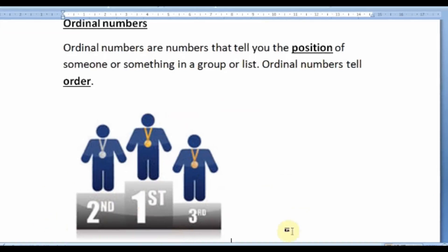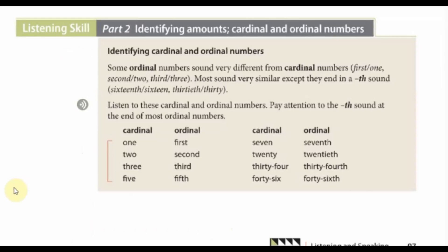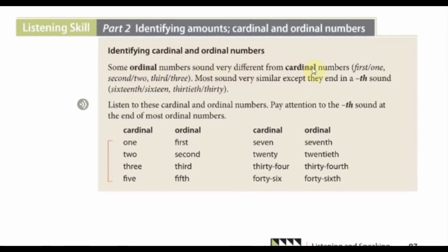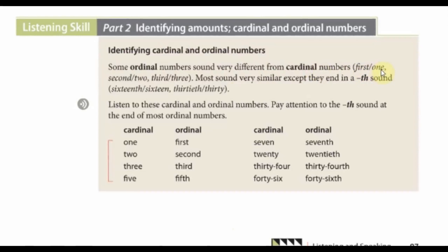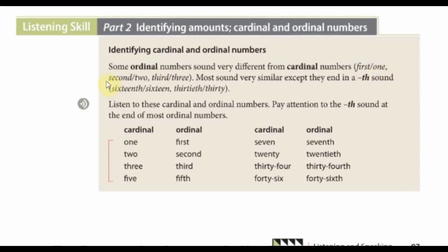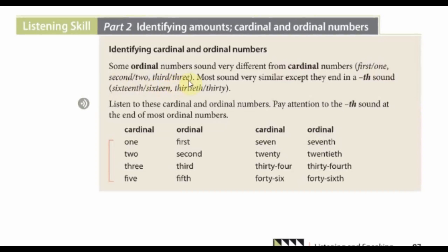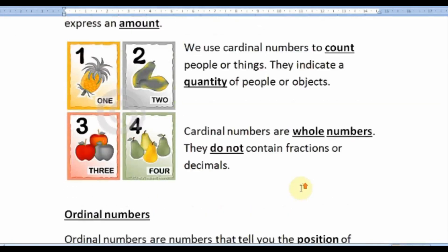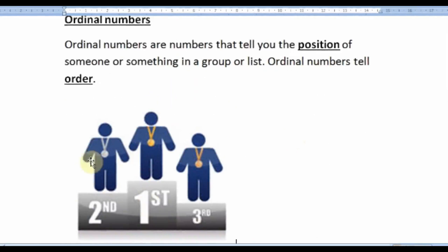So these are examples of ordinal numbers: first, second, and third. Let's go back to our lesson. Identifying cardinal and ordinal numbers — some ordinal numbers sound very different from cardinal numbers, such as 'first' and 'one'. We have the ordinal number 'first' and the cardinal number 'one', the ordinal number 'second' and the cardinal number 'two', and the ordinal number 'third' and the cardinal number 'three'. So these are very different. In our picture we have one, two, three — however the ordinal numbers are first, second, and third.